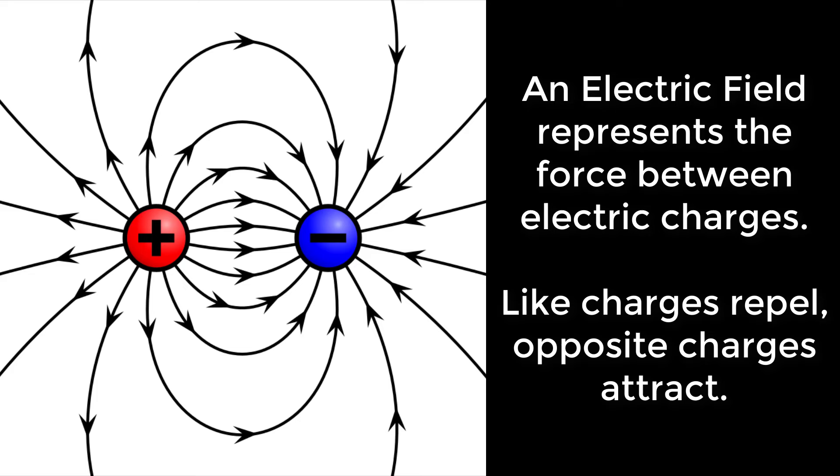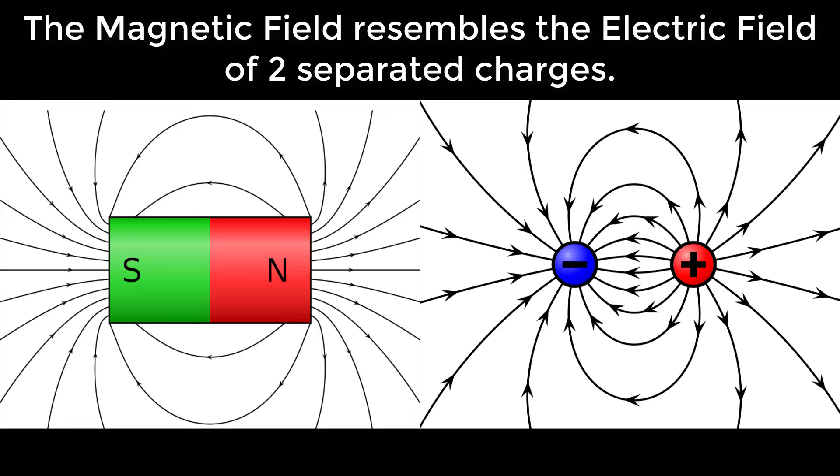An electric field represents the force between electric charges. Like charges repel, opposite charges attract. The magnetic field resembles the electric field of two separated charges.